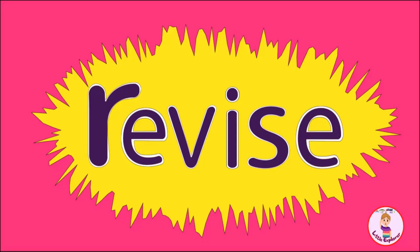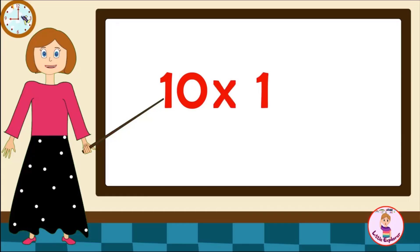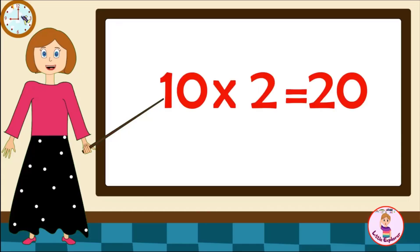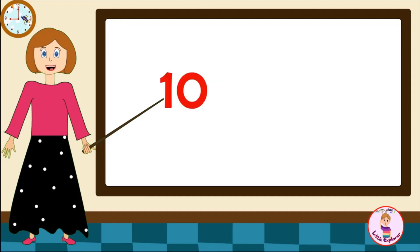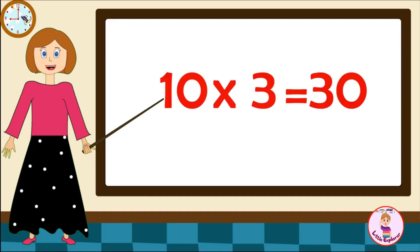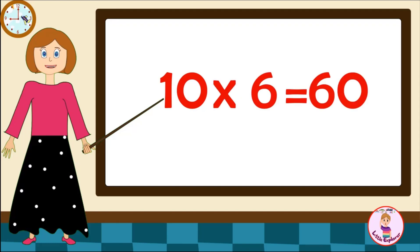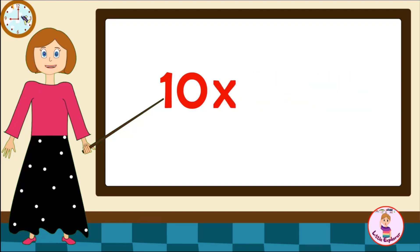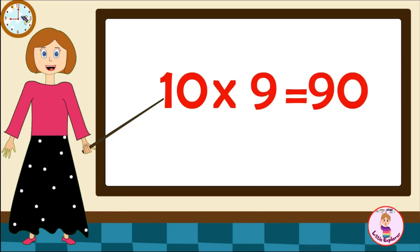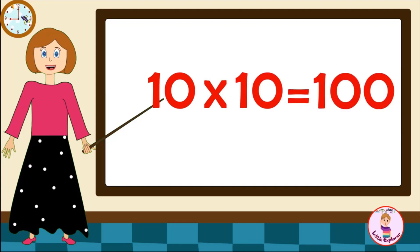Table of Ten. Let's revise it one more time. Come on! Ten-one's are ten. Ten-two's are twenty. Ten-three's are thirty. Ten-four's are forty. Ten-five's are fifty. Ten-six's are sixty. Ten-seven's are seventy. Ten-eight's are eighty. Ten-nine's are ninety. Ten-ten's are a hundred.